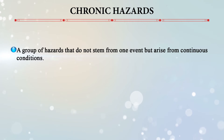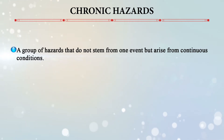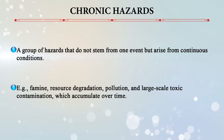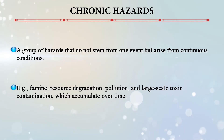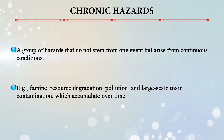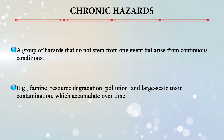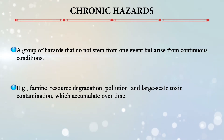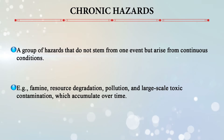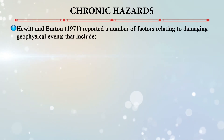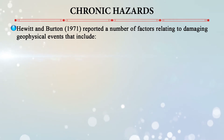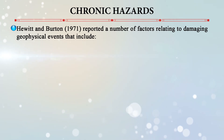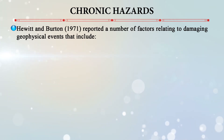Chronic hazards are a group of hazards that do not stem from one event but arise from a continuous condition — for example, famine, resource degradation, pollution, and large-scale toxic contamination. These accumulate over time and eventually cause chronic hazards.